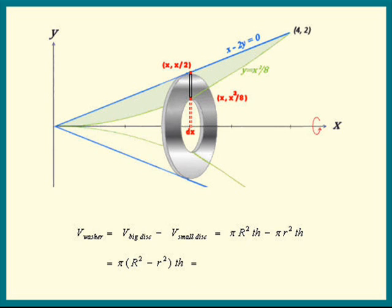Let's factor out the pi. We get pi times big R squared minus small r squared times the thickness. The big R is also called the outer radius, the small r the inner radius.